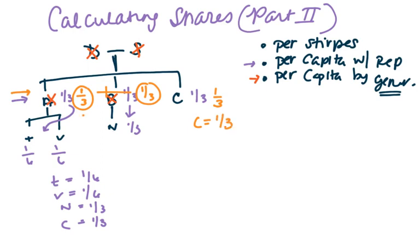We have two-thirds left. That two-thirds is split equally amongst T, V, and N. So each of them gets a third. So we do a third of two-thirds, which is two-ninths.